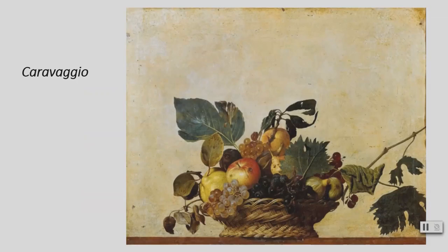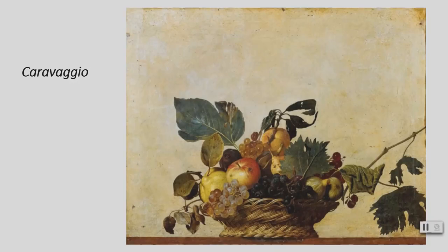Michelangelo Merisi da Caravaggio was an Italian Baroque painter. He lived in Rome, Naples, Malta, and Sicily in the 1590s to 1610. His paintings show the dramatic use of light with realistic observation. His chiaroscuro became known as tenebrism. This idea helps me darken my shadows and brighten the lights on my subject.